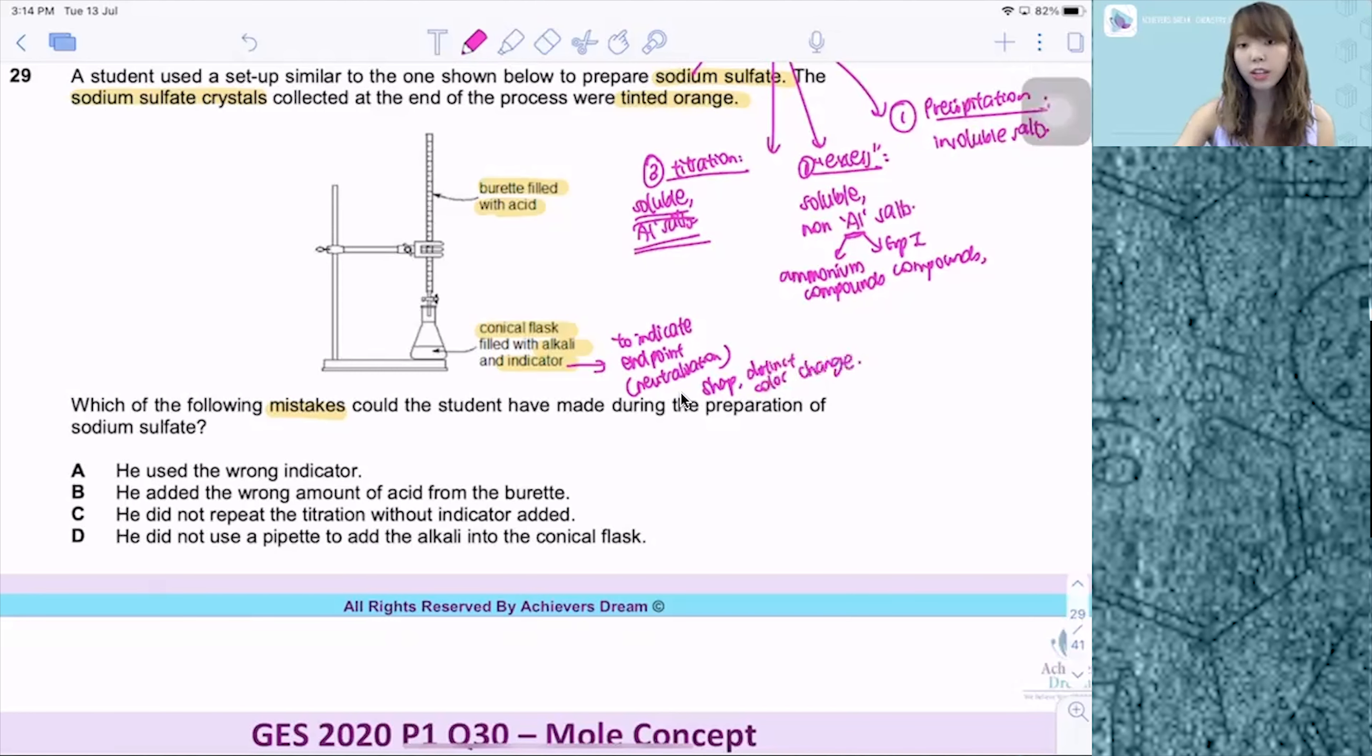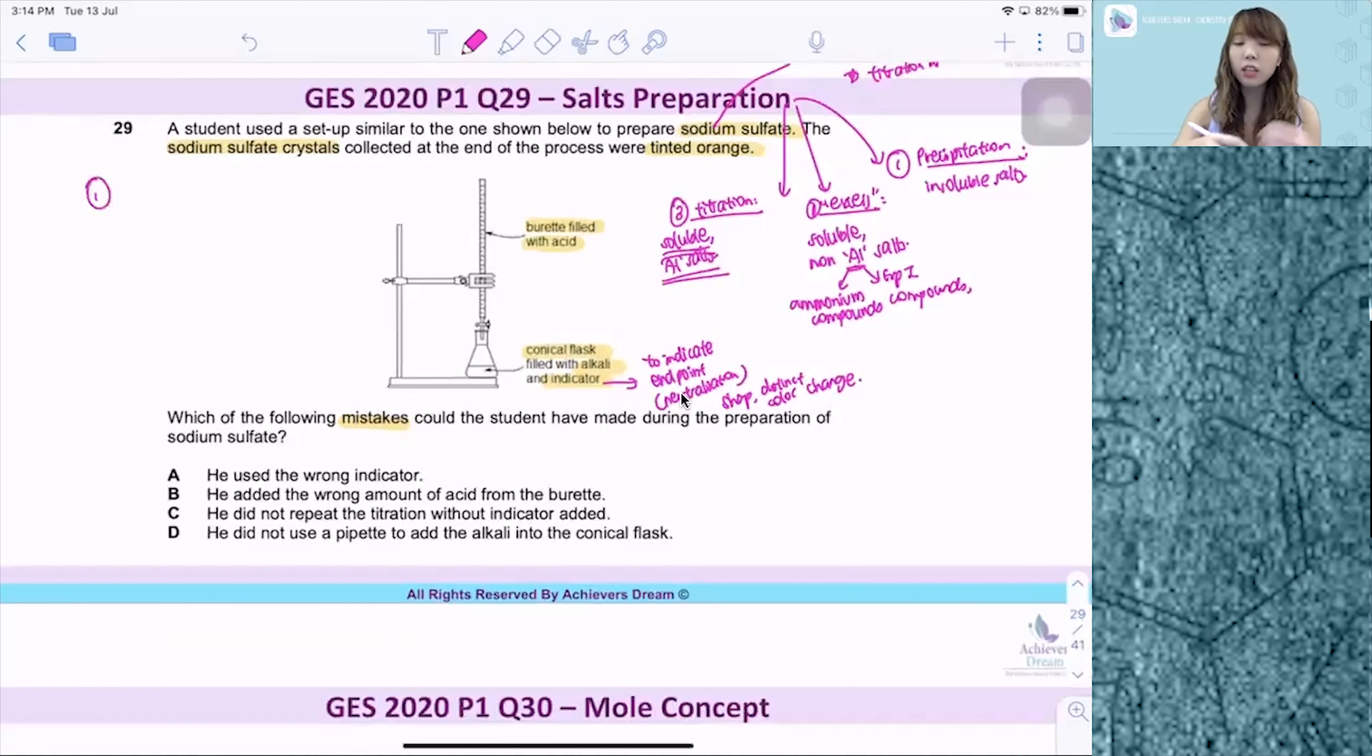So how do we conduct titration experiment? First one is after adding in the indicator, we set up this diagram. We are going to add the acid from the burette, drop by drop, swirling after each drop. Then after that, the moment indicator changes color, we stop the titration. We stop the titration and record down the volume of acid that is required, that is used to fully neutralize the alkali.